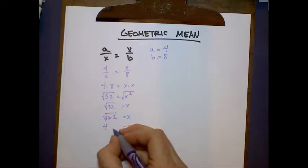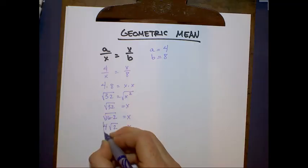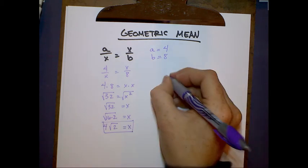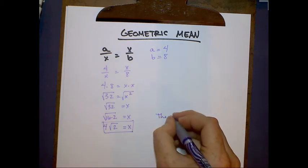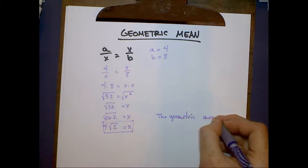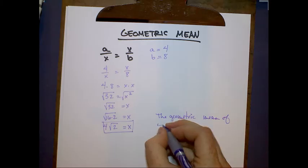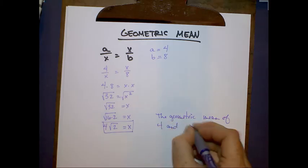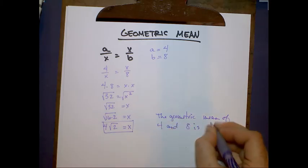In other words, to reduce this, it's 4 radical 2. And that means that the geometric mean of 4 and 8 is 4 radical 2.